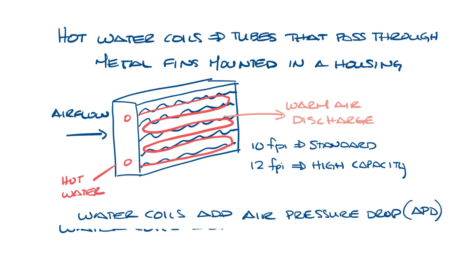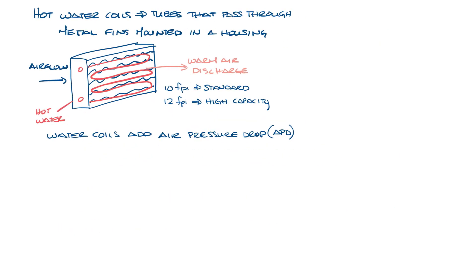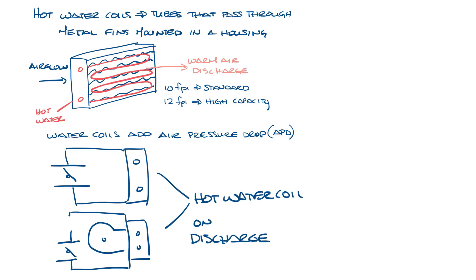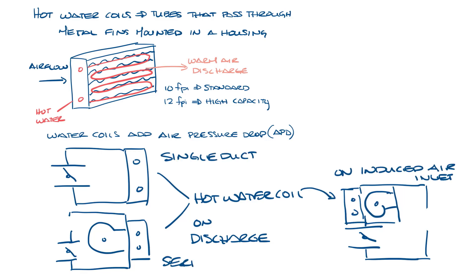Water coils typically mount to the discharge of single duct boxes and series fan powered boxes, but they're often mounted on the induced air inlet of the parallel fan box so that the additional pressure drop of the water coil is only an issue during heating when the fan is on.